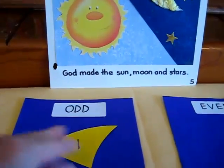For example, one is an odd number, so he would put it over here.